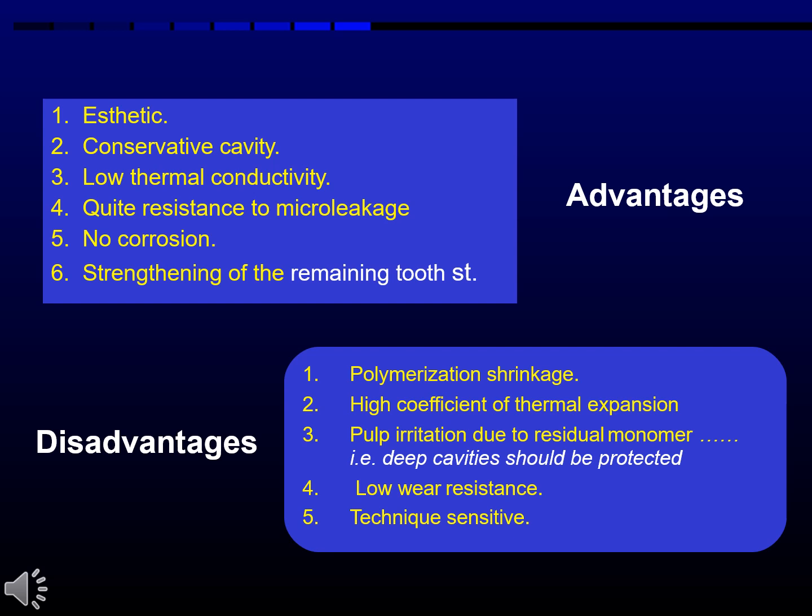Advantages of resin composites include: aesthetics, conservative cavity preparation, low thermal conductivity, good resistance to microleakage, no corrosion, and strengthening of the remaining tooth structure. Disadvantages include: polymerization shrinkage, high coefficient of thermal expansion, pulp irritation due to residual monomer, low wear resistance, and technique sensitivity.